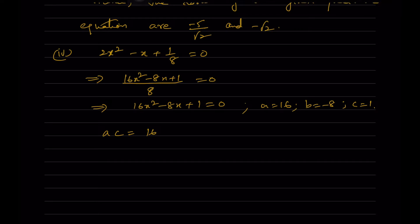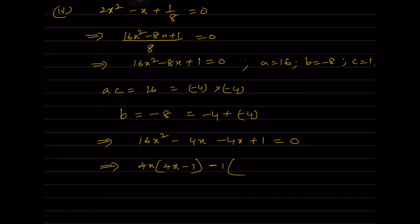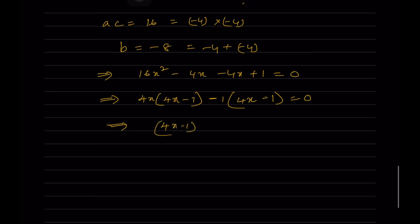ac = 16 × 1 = 16. We can write -8 as (-4) + (-4). So 16x² - 4x - 4x + 1 = 0. Taking 4x common from first two: 4x(4x - 1) - 1(4x - 1) = 0, which gives (4x - 1)(4x - 1) = 0, so (4x - 1)² = 0.